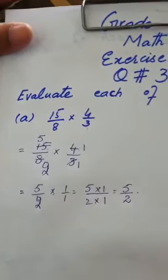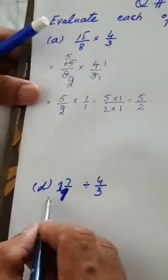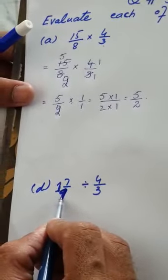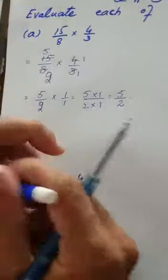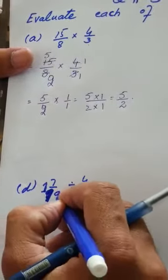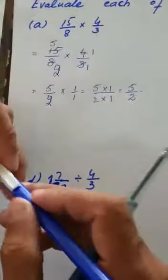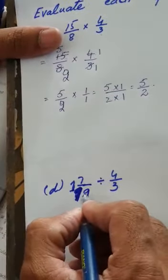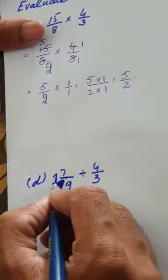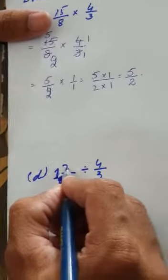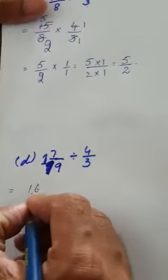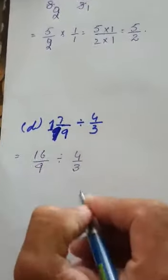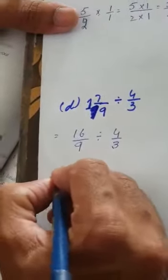Now in part D we are given a mixed form of fraction. First of all we will dissolve this mixed fraction. This number is 9, so the mixed fraction becomes: 9 ones are 9 plus 7, which equals 16, giving us 16 over 9, divided by 4 over 3.